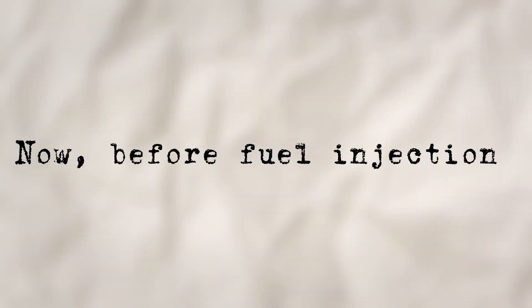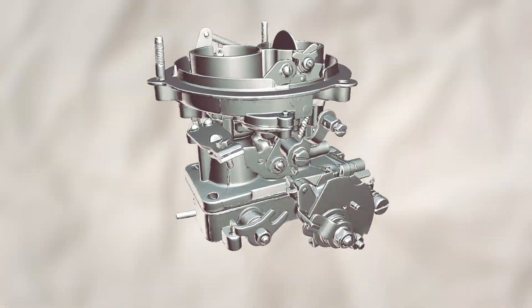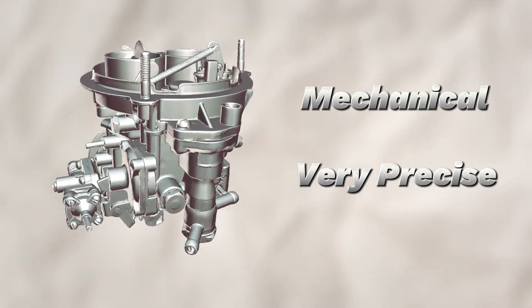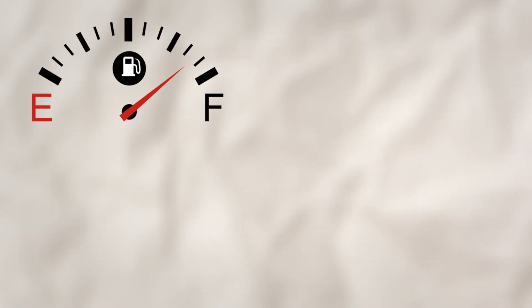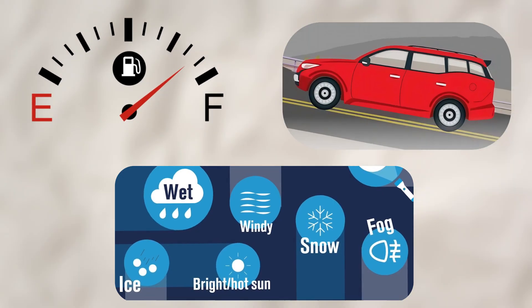Before fuel injection, cars relied on carburetors to mix air and fuel. Carburetors were mechanical and did the job, but they weren't very precise. They wasted fuel, struggled at different altitudes, and couldn't adapt well to changing driving conditions.